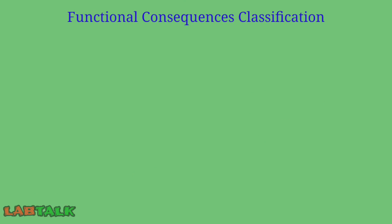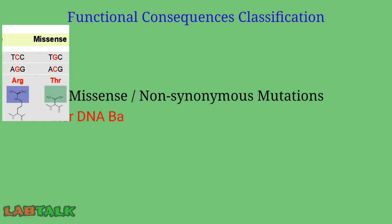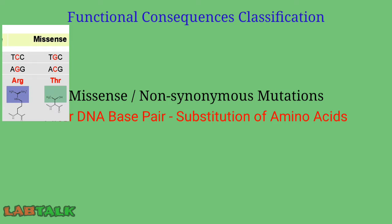The next type is a missense or non-synonymous mutation. This type of mutation occurs due to alteration in one DNA base pair that results in the substitution of one amino acid for another.